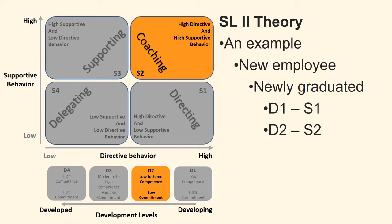After a while, you notice the employee is a little frustrated that it takes much longer to understand the systems and tasks of the company than he had imagined. You re-evaluate the employee's development level to D2: competence is higher than in the beginning, but motivation has dropped a lot. You therefore choose leadership style S2, where you coach the employee — explaining why, involving the employee in problem-solving, redirecting and re-teaching.